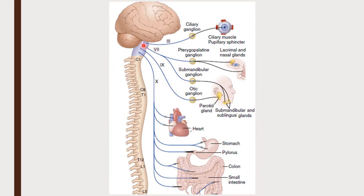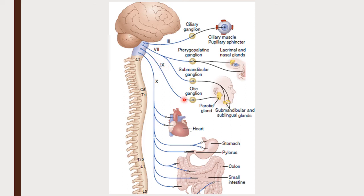Looking at the diagram: the superior salivary nucleus gives rise to preganglionic fibers that enter the facial nerve and relay over the submandibular ganglion. Postganglionic fibers from the submandibular ganglion innervate the sublingual and submandibular glands. The inferior salivary nucleus gives rise to preganglionic fibers entering the ninth cranial — glossopharyngeal — nerve, which relay at the otic ganglion, from where postganglionic fibers innervate the parotid gland.